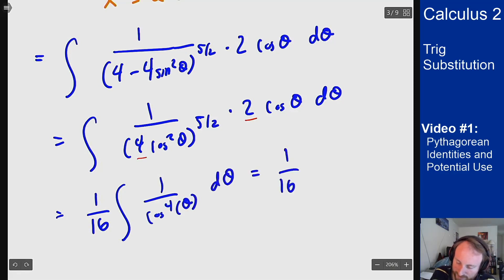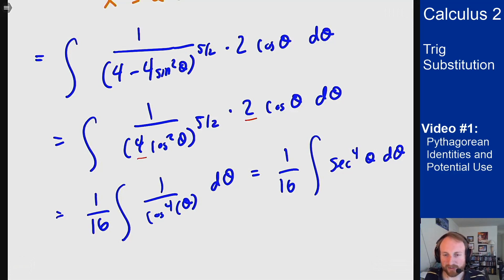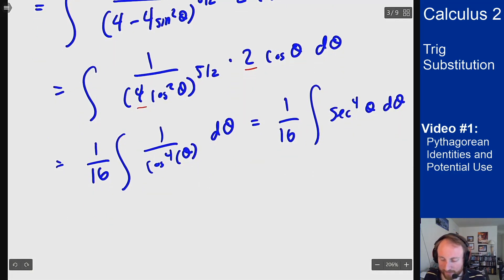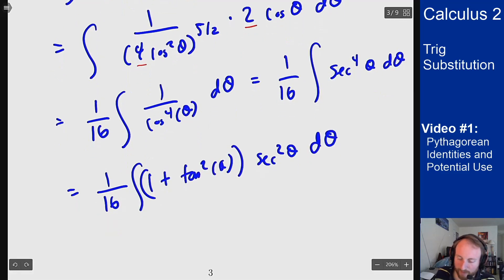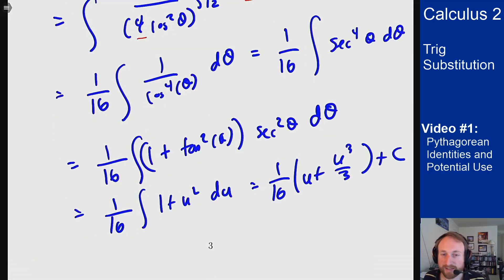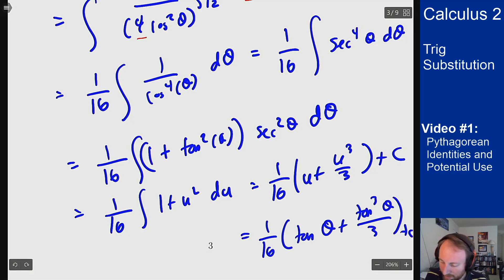1 over 16, integral of secant to the 4th theta d theta. I see now an even power of secant, so this is an easy integral from our trig integral section last time. So I want to convert two of those into powers of tangent, and then I want to use the rest as a du term. So I have 1 over 16, integral of secant squared is 1 plus tangent squared. I can make my substitution, I can then do the integral, and then I can sub back in for u, which was tangent. And I get that answer for this integral.